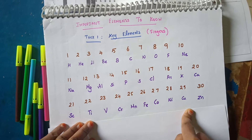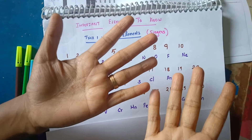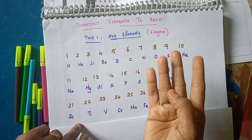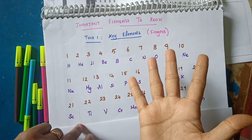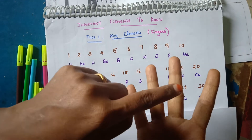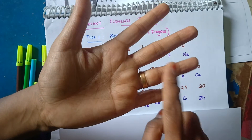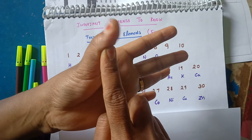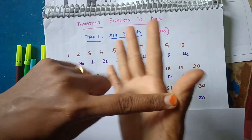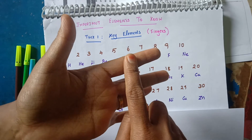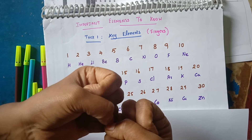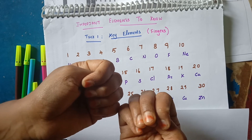Next, we move to 21 to 30. So, 21, 22, 23, 24, 25, 26, 27, 28, 29, 30. Elements: Scandium, Titanium, Vanadium, Chromium, Manganese, Iron, Cobalt, Nickel, Copper, Zinc. Pause the video and practice 10 times.